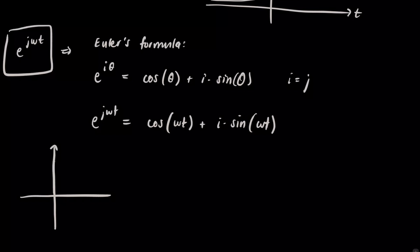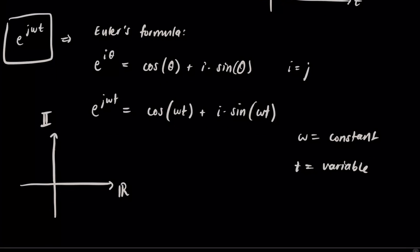So if you plotted on the imaginary axis and the real axis, omega is constant, and t is a variable. So if you plotted this out, you would get something that sort of moves around with time.